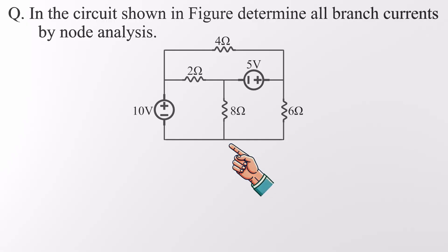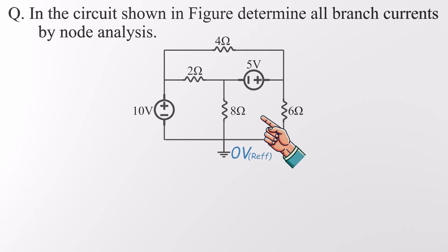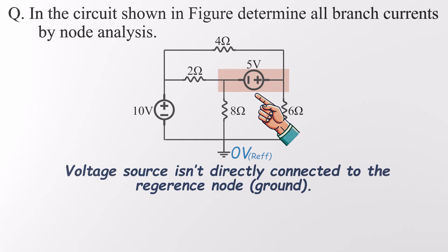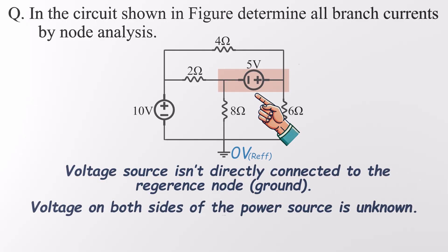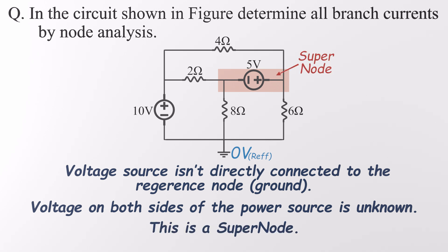Let's pick this point as our reference node. The voltage source isn't directly connected to it, which means we don't know the voltages on either side of that source. No matter which node we choose as ground, one of the voltage sources will always be floating — disconnected from ground. That's where something interesting comes in: this setup creates what's known as a supernode.